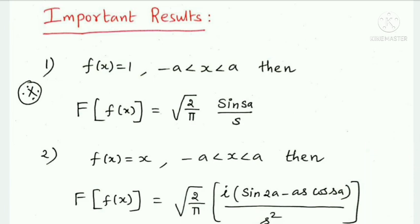Important results in Fourier transform. First: if f(x) = 1 where −a < x < a, then Fourier Transform of f(x) equals √(2/π) times sin(aS)/S, which is also written as sin(as)/s.